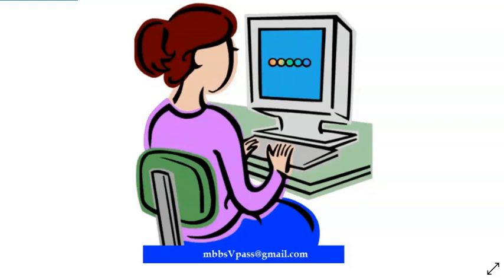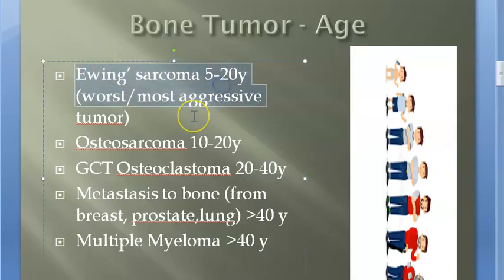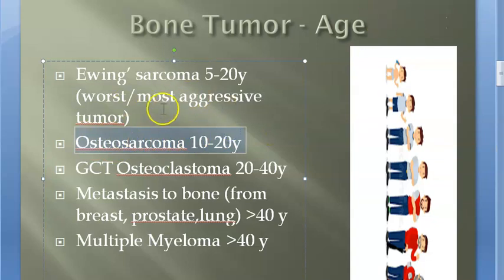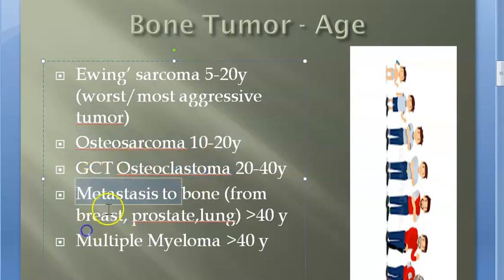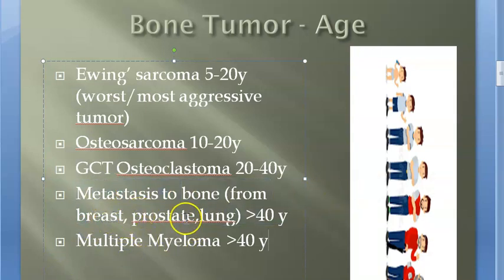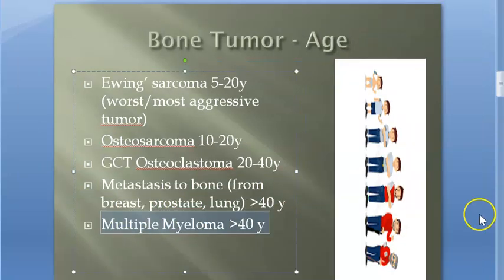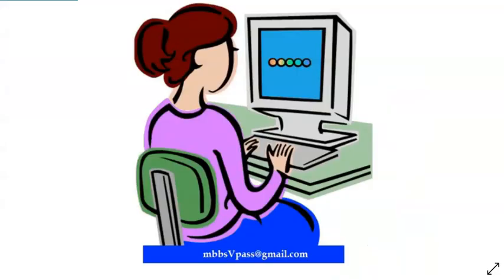Classification by age: Ewing's sarcoma affects 5 to 20 years — it is the most aggressive tumor. Osteosarcoma affects the second decade of life (10–20 years). Giant cell tumor occurs between 20 to 40 years. Metastasis to bone occurs beyond 40 years, from breast, prostate, or lung. Multiple myeloma occurs at greater than 40 years.